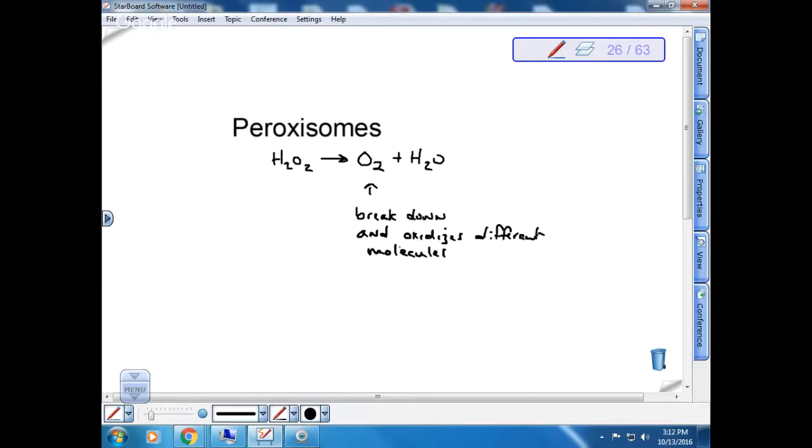One that it does that's really important is ethanol. So ethanol is alcohol. So if you drink alcohol, the ethanol is broken down. A good portion of it is broken down in the peroxisome. So it metabolizes alcohol for us. It also breaks down fatty acids, specifically long chain fatty acids.